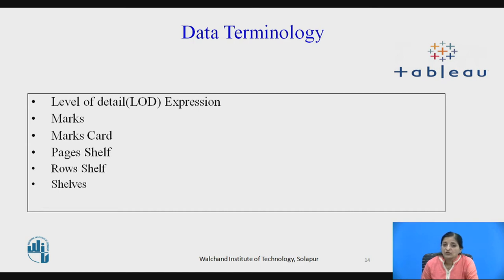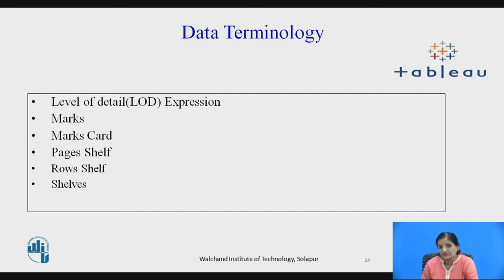Marks is a part of a view which consists of one or more rows of a data source. Using marks, we can apply type, format, color and more to mark fields — marks can be, for example, a line, bar, or square. Marks card is a card that forms part of the view on the left side. You can drag dimensions or measures into the marks card to control their colors, format, shape, and levels of detail.